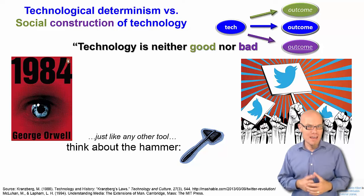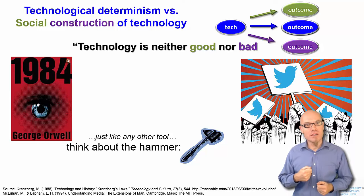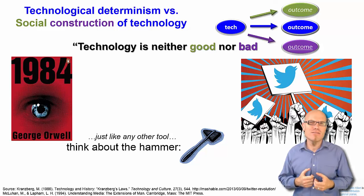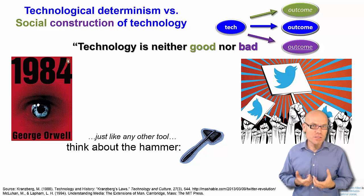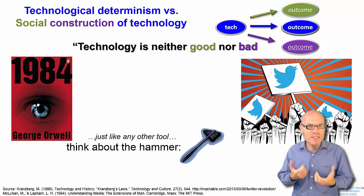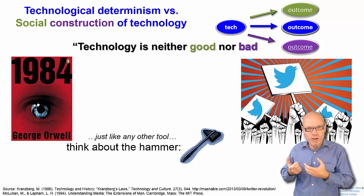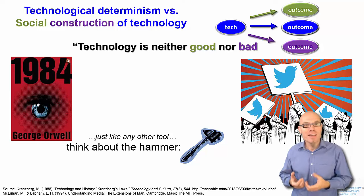Technology is just a tool. Think about the hammer — a hammer is also just a tool. A hammer can be extremely useful; you couldn't build a house or hang up a picture without something equivalent to a hammer. But everything functionally equivalent to a hammer can also be used to hurt or even kill people. Is this the fault of the hammer? No. The hammer is not inherently good or bad. The hammer is just a tool.